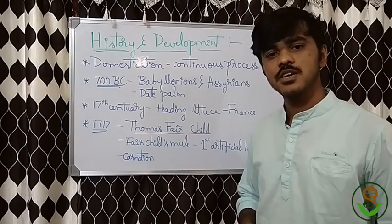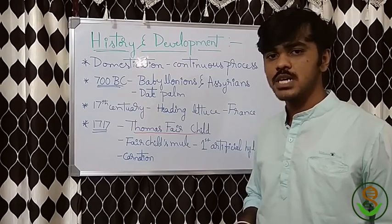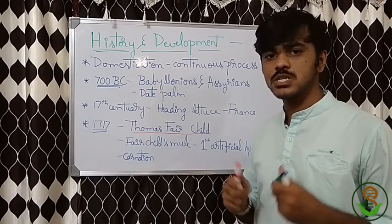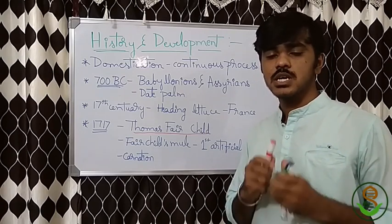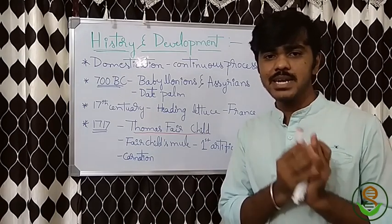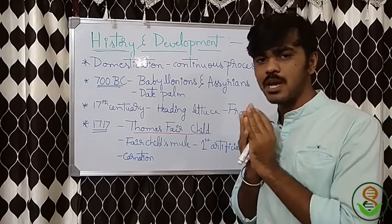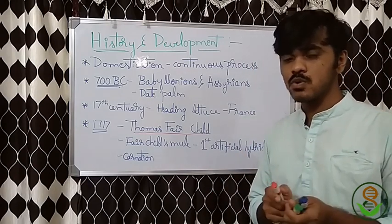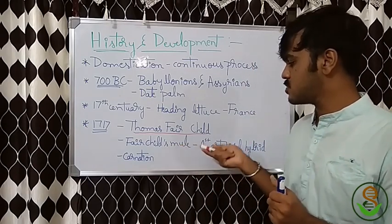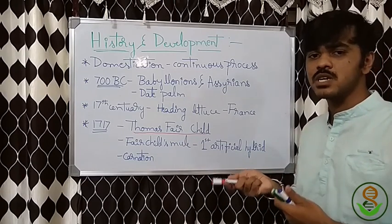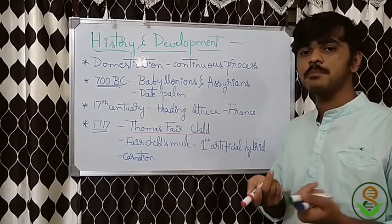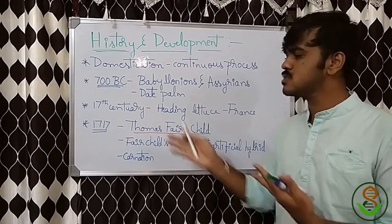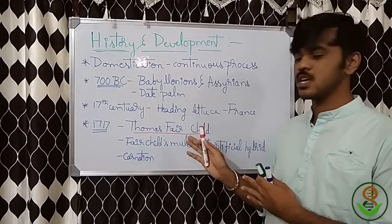You know about a mule — it is a first breed developed by crossing two different species: a male donkey crossed with a female horse. Similarly, Fairchild's Mule is the first hybrid developed in plants, specifically in carnation. So it is called Thomas Fairchild's Mule.